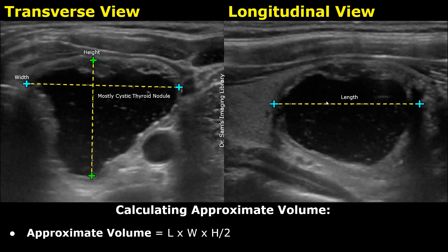Now we will learn how the volume of the cyst is measured on ultrasound. The ultrasound machine can automatically calculate the volume once you have input the length, height, and width values. But if you want to calculate it manually, you can use this formula: length into width into height divided by 2.